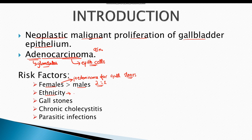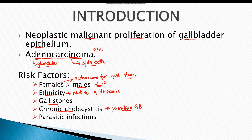In the United States, gallbladder carcinoma is more common in the native population and Hispanic groups. The formation of gallstones also predisposes to the development of carcinoma. Chronic cholecystitis is important since it can transform into a calcified gallbladder known as porcelain gallbladder, which is a major risk factor. Certain parasitic infections like ascariasis also predispose to gallbladder carcinoma.